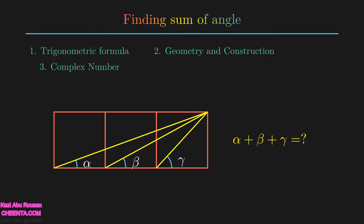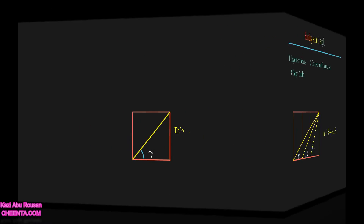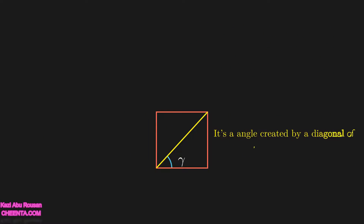In this video we will only be seeing the second and third methods. For the first square, the line is actually a diagonal, so gamma must be 45 degrees.